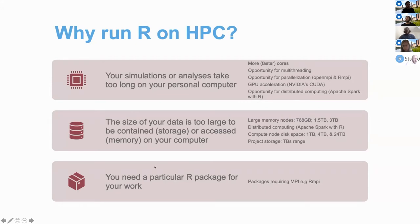We also have some packages that we maintain at OSC that you don't have to install or compile — we've already done that. Some of them are for MPI parallelization, like the RMPI package. Some people have issues installing this because you need to compile it against a specific version of OpenMPI. You don't need to do that because it's already been compiled on OSC — you just need to load the library in R to take advantage of MPI parallelization.